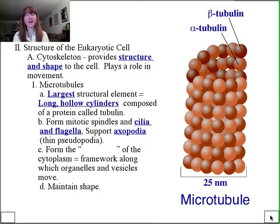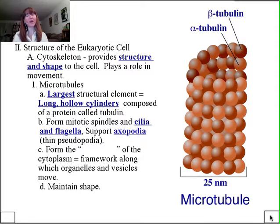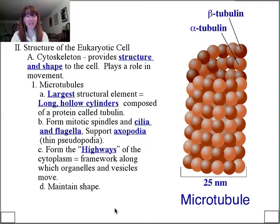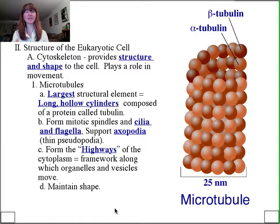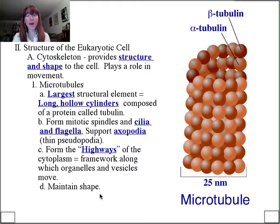Axopodia play a large role in things like radiolaria in the ocean — they have these spiky protrusions that help them acquire nutrients and also help with buoyancy, floating within a marine environment. Microtubules also serve as the highways of the cell. They provide a route on which vesicles can get around — like a city that never sleeps, you might think of microtubules as the roadways and vesicles as the taxi cabs running around on those highways. Shape maintenance is another very important role.